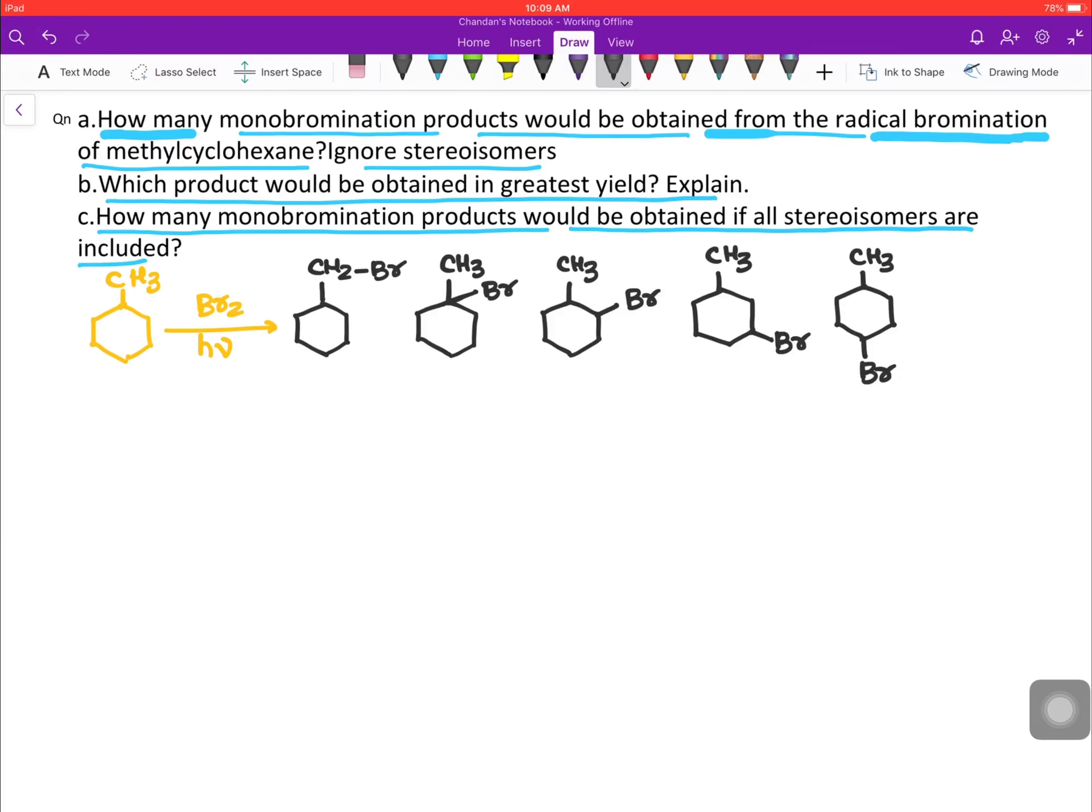So these are the five different monobrominated products excluding the stereoisomers. This is the solution for the first part, and we get a total of five products.